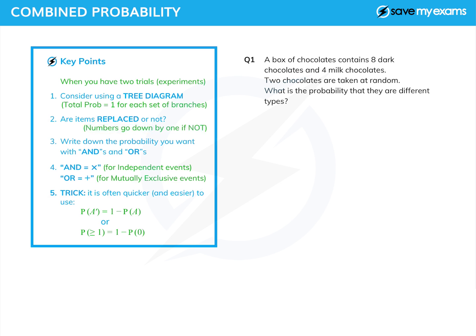Whether you use a tree diagram or not, it's always a good idea to write down the probability you want with AND and OR between the things, as you would naturally say it. And then once you've done that, AND is always times, and OR is always plus.